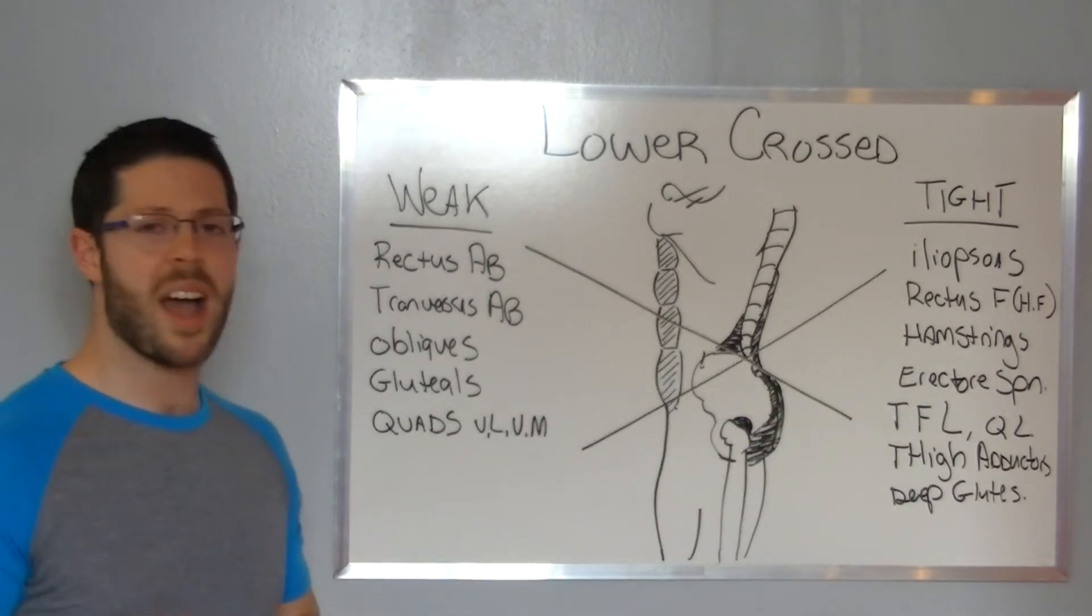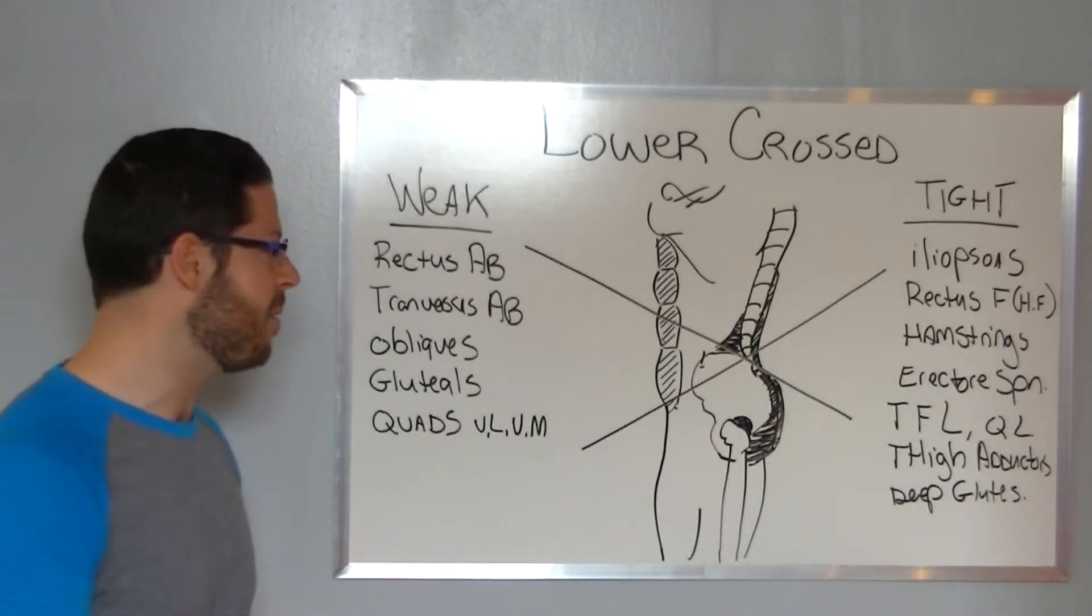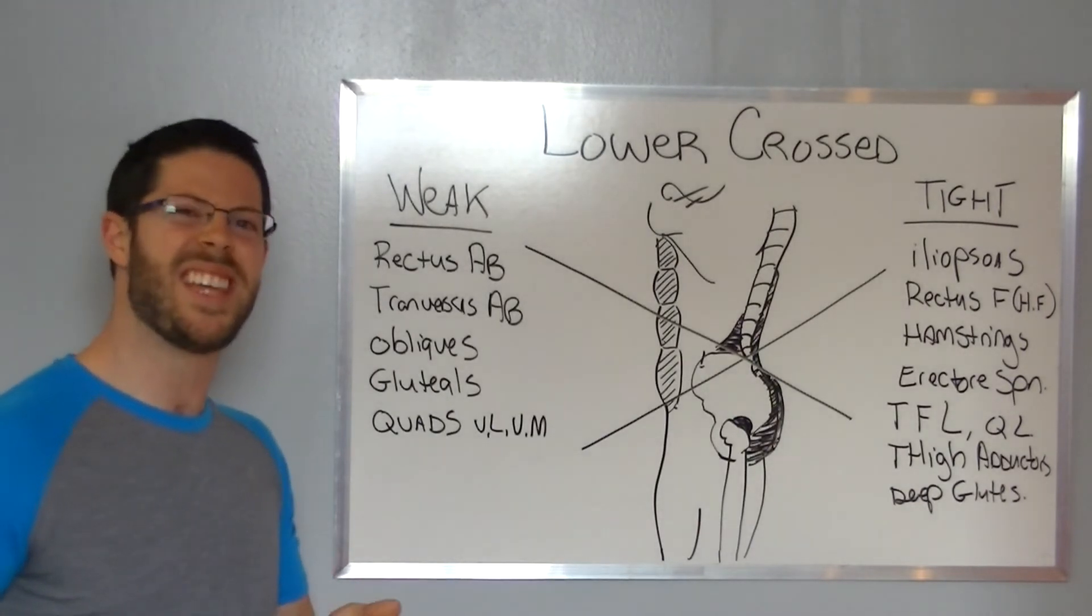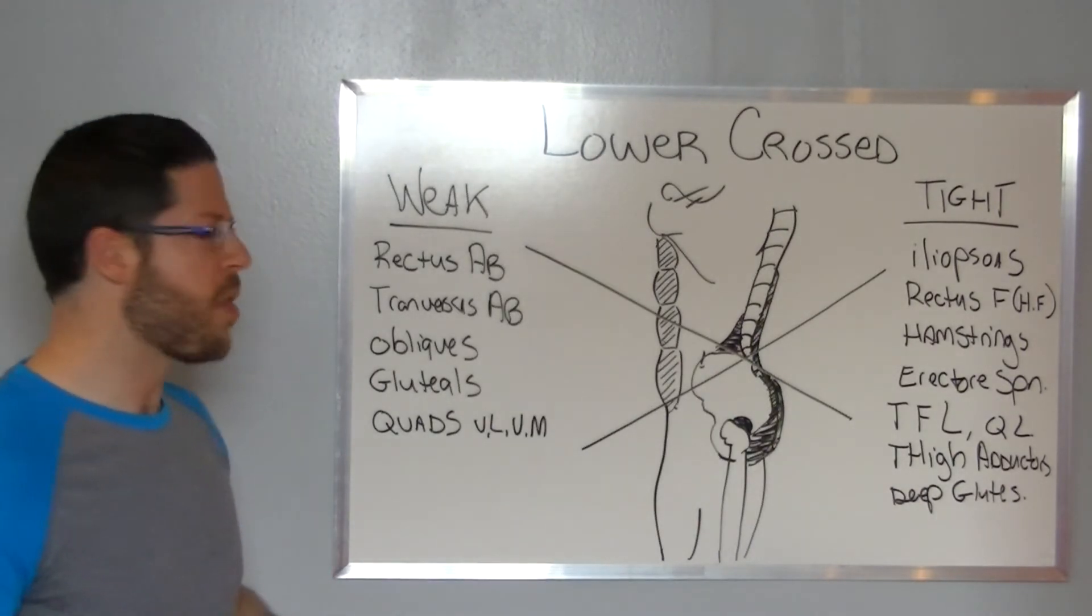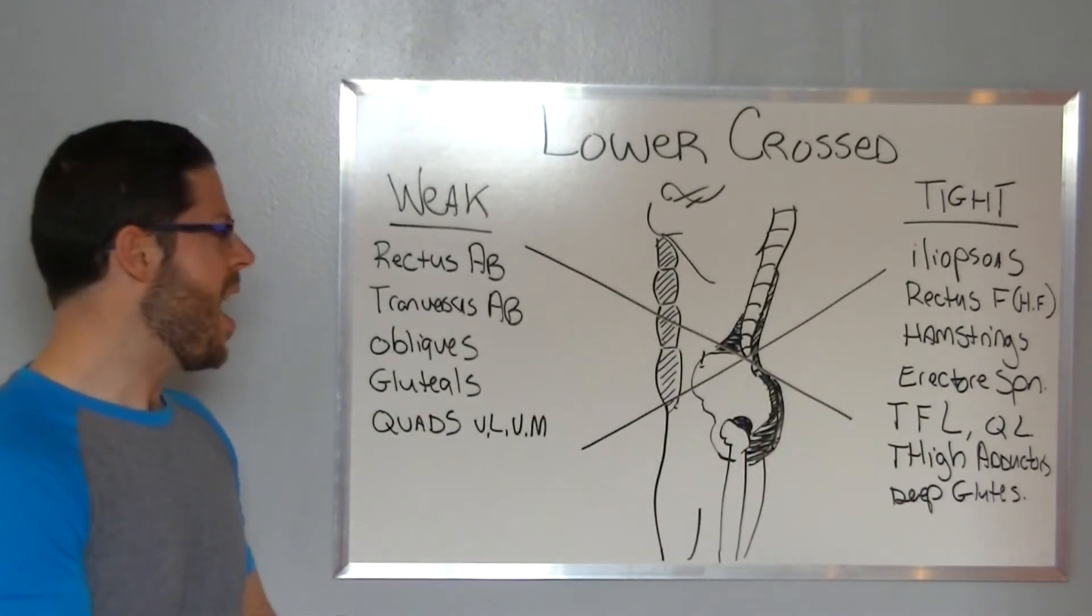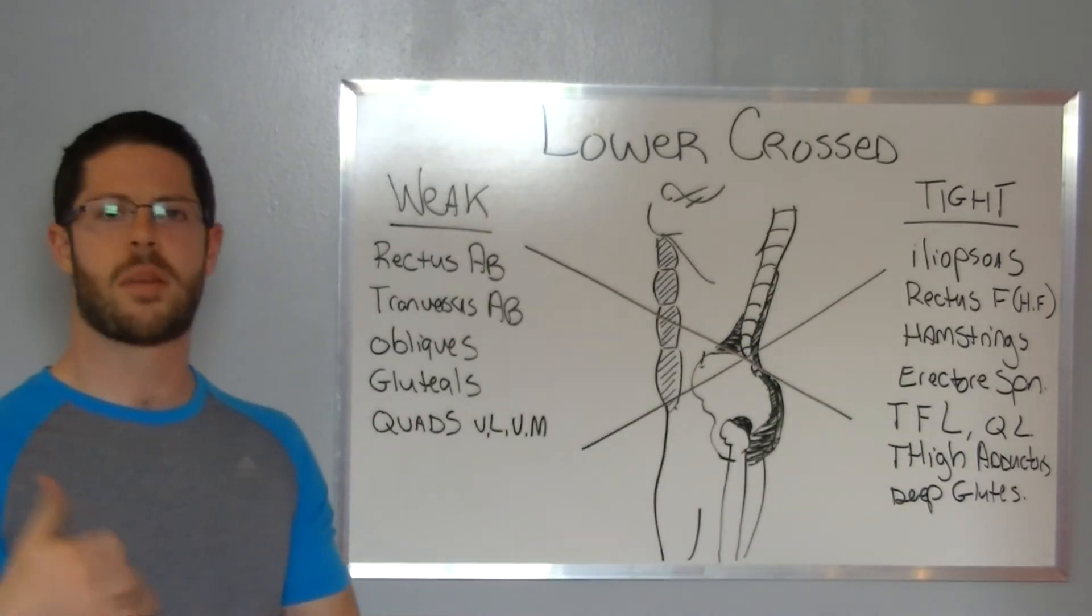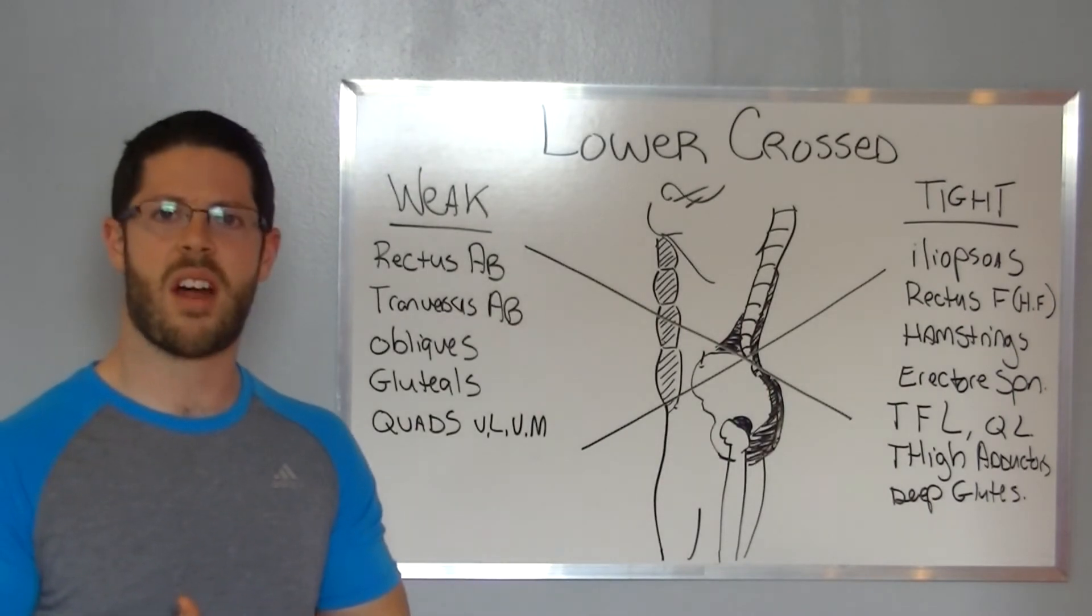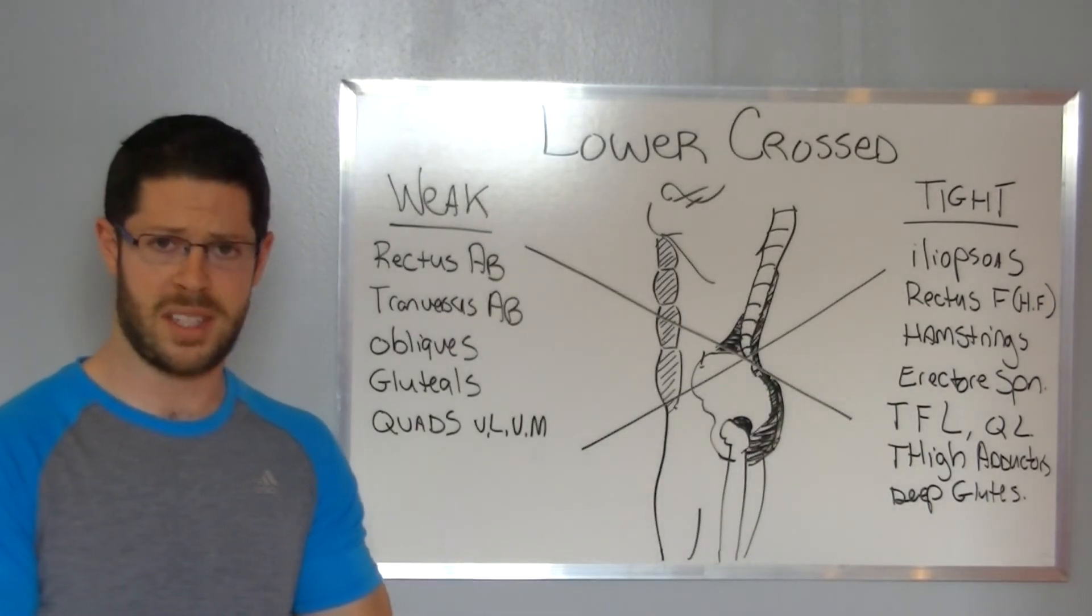Erector spinae, the lumbar erectors, they get tight. Your TFL and your quadratus lumborum, that deep lumbar muscle. Thigh adductors, they try to compensate a lot. And the deep glutes, such as the piriformis, they compensate as well, and they generally become very, very tight.